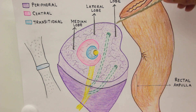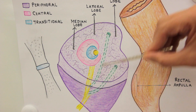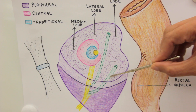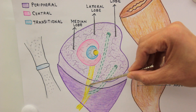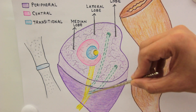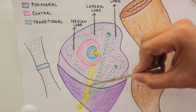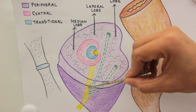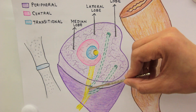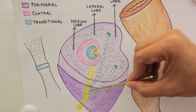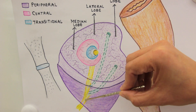Here we are looking at the two ejaculatory ducts and how they are traversing through the substance of the prostate. They open into the prostatic part of the urethra on either side of the urethral crest, or the seminal colliculus, dumping the ejaculate or semen into the prostatic part of the urethra.